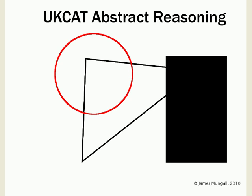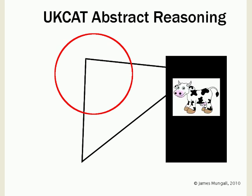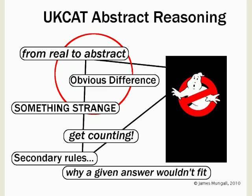Welcome to this tutorial on UKCAT Abstract Reasoning Tests. I want to suggest how these questions might relate to the real world and give you some idea of how to go about tackling them. We'll look at how real world scenarios are turned into abstract pictures and why this is done, then how to get going by looking for obvious differences, looking for something strange, the need to get counting, and secondary rules or why a given answer wouldn't fit.